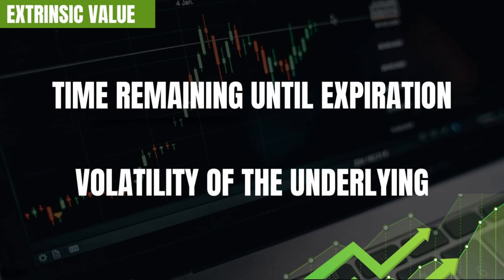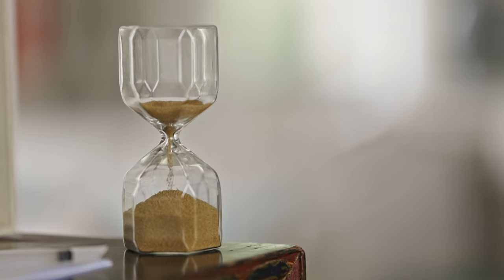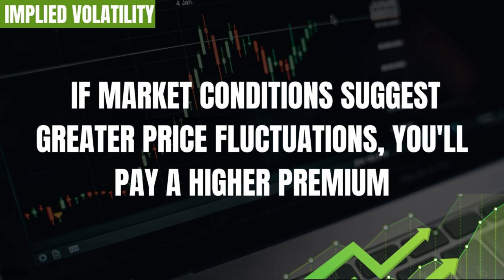Extrinsic value accounts for the time remaining until expiration and the volatility of the underlying asset. As the expiration date approaches, the time value decreases, which impacts the overall pricing of the option. Implied volatility plays a huge role in determining option prices — if market conditions suggest greater price fluctuations, you're going to pay a higher premium. Market conditions such as supply and demand dynamics, economic events, and overall market sentiment can all affect the bid and ask price of a contract.